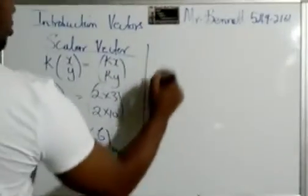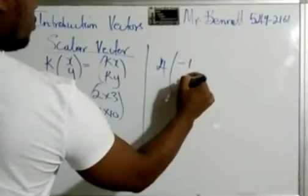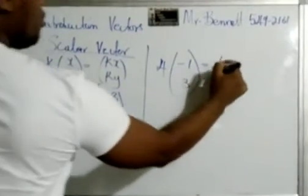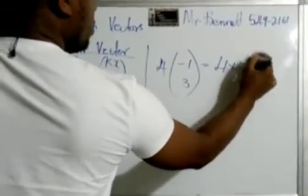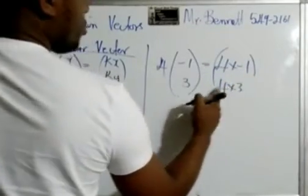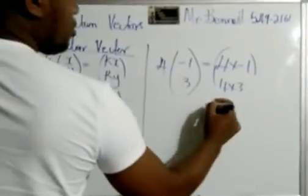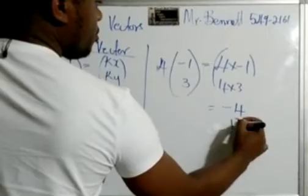Let us look at another example. Say we have 4 times (-1, 3). It would be 4 times negative 1, 4 times 3. So k would be 4, right? The constant 4. So it would be negative 4, and 4 times 3 is 12.